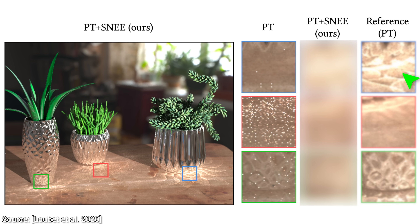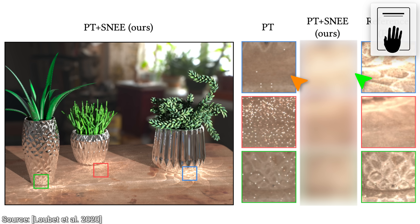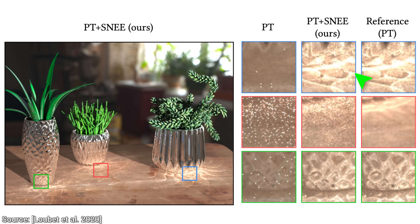This is what the fully rendered reference image looks like — the one that takes forever to compute. Quite different, right? Let's allocate two minutes for the new method and see how well it does. Can it beat the naive algorithm? Hold on to your papers and let's see together. What? On this part, it looks almost exactly the same as the reference. This is insanity — a converged caustic region in two minutes!